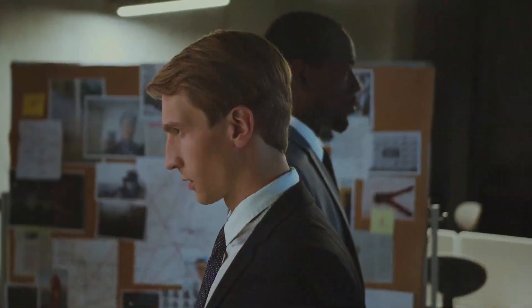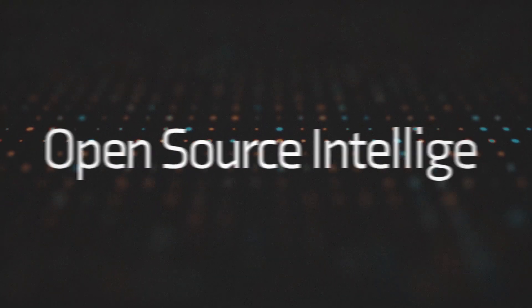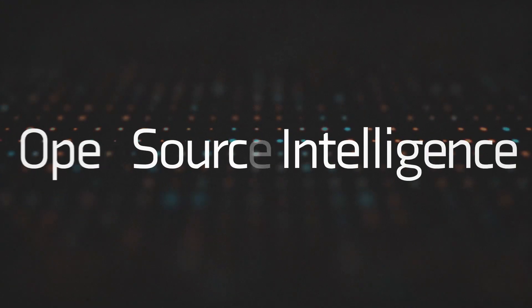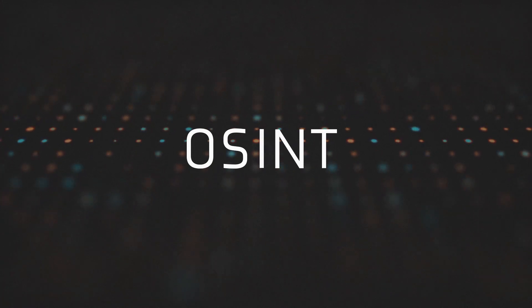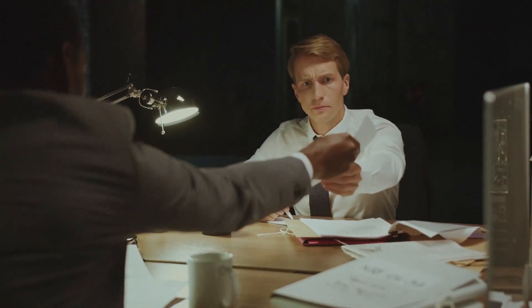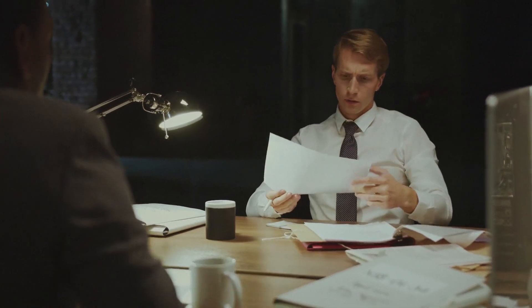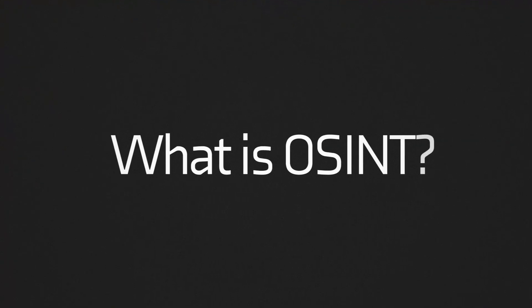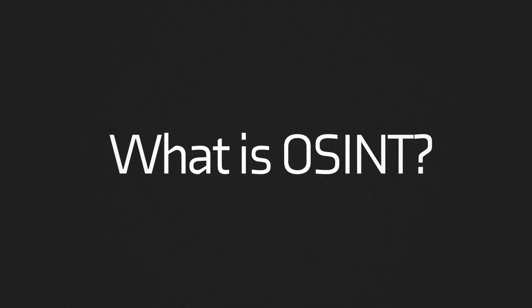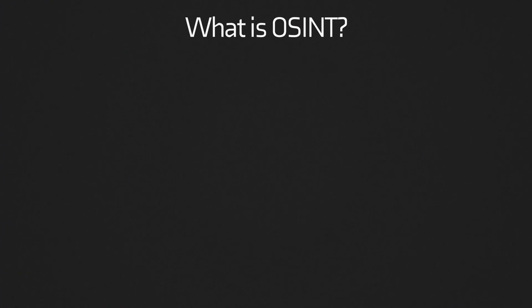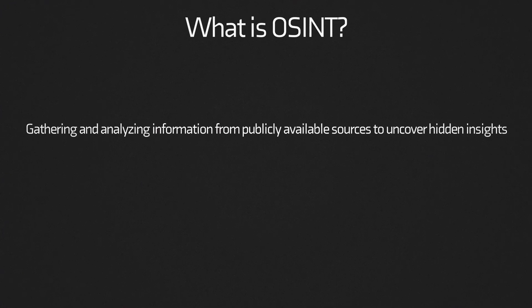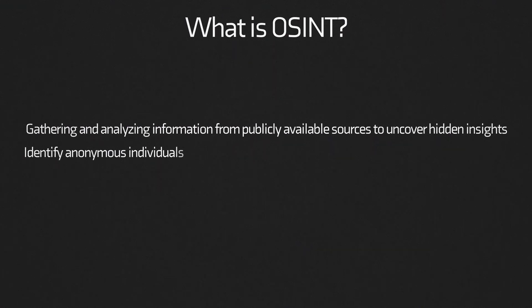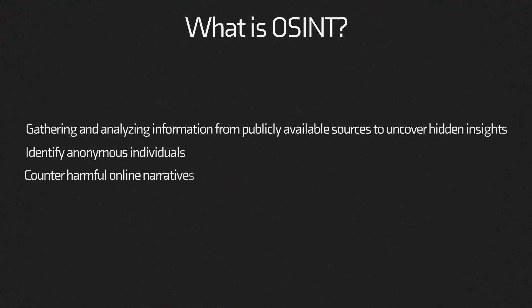Have you ever wondered how investigators uncover the truth behind online identities and networks? In the world of open source intelligence, or OSINT, investigators utilise a range of techniques to conduct their investigations. Open source intelligence involves gathering and analysing information from publicly available spaces to uncover hidden insights, identify anonymous individuals, and counter harmful online narratives.